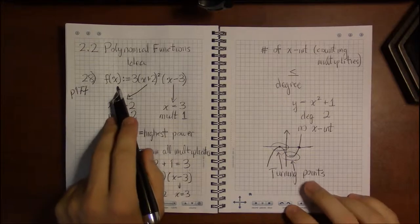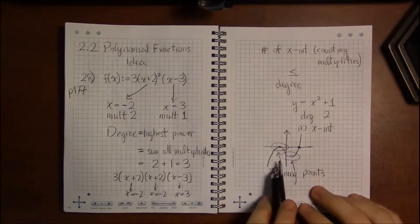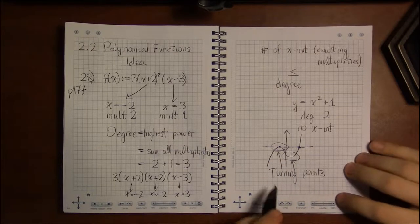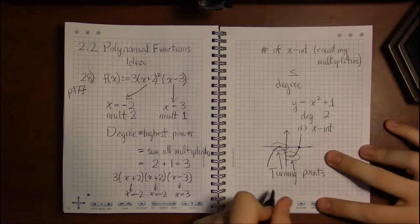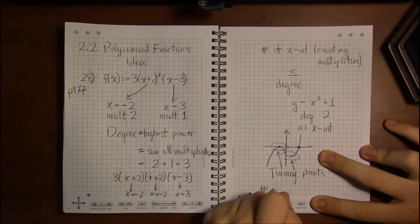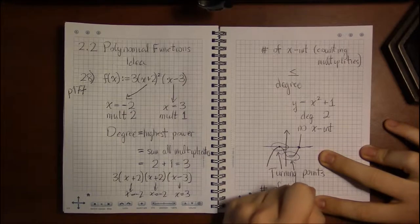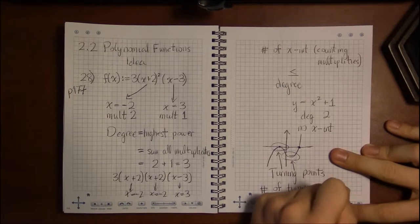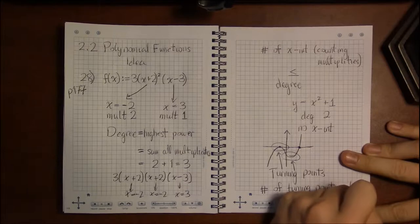For this graph, a rough sketch of this polynomial here, this has two turning points. And it turns out that the maximum number of turning points that you can have—the number of turning points of any polynomial—is less than or equal to the degree of the polynomial minus one.